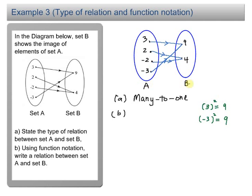So you can see the relation between set A and set B is, you get the element in set A, you square it, then you will get the element in set B. So using function notation, f of x will be equal to x squared.